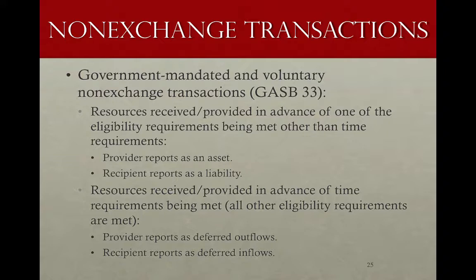The provider — the state — credits its cash because the cash went out the door, and debits an asset called 'grants provided in advance' until the eligibility requirement is met. When the school district establishes the program and becomes eligible, it recognizes revenue. The provider — the state — recognizes an expense or expenditure, depending on which financial statements you're looking at, and the deferred inflow or deferred outflow for the recipient or provider respectively will be eliminated.